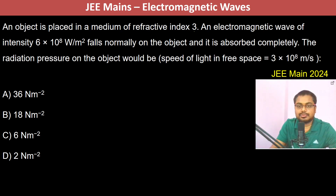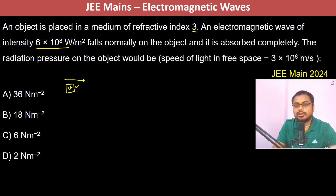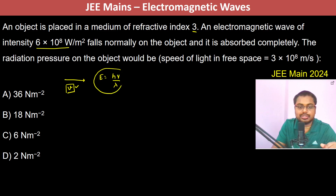An object is placed in a medium of refractive index 3. An electromagnetic wave of a given intensity falls normal to the surface. The velocity of the electromagnetic wave is V. The photons have energy equal to hν/λ — this is the energy of each photon.